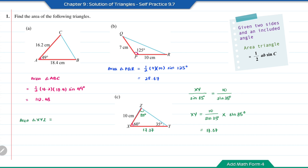The area of triangle XYZ equals 1 over 2 times 10 times 17.37 times sin 60°, which equals 75.21.